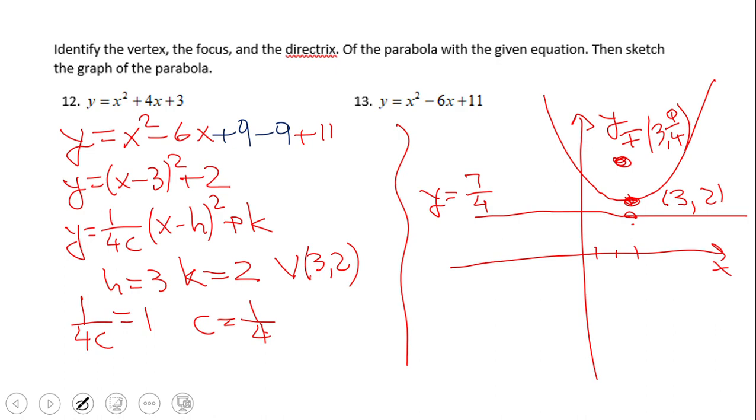If you have this answer for this problem, I did a wonderful job. The vertex is 3 and 2. C, 1 fourth, like in the previous problem. That will allow us to go 1 fourth down, right from the vertex. 1 fourth down, you get the directrix. 1 fourth up, you get the focus, and move on, okay?